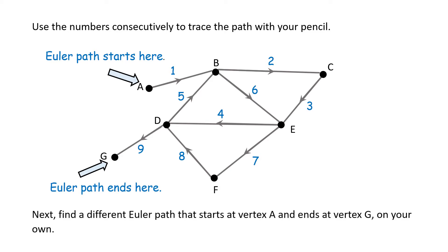Next, find a different Euler path that starts at vertex A and ends at vertex G on your own.